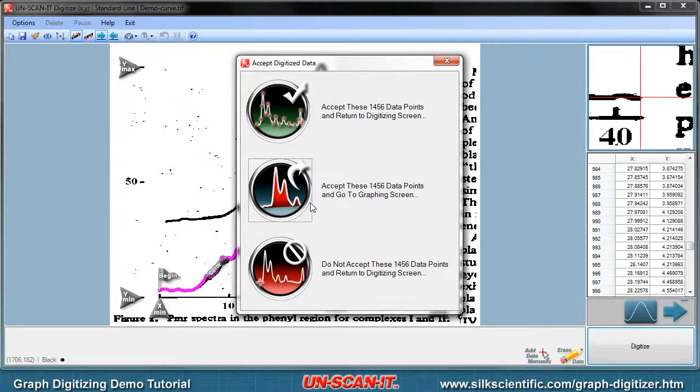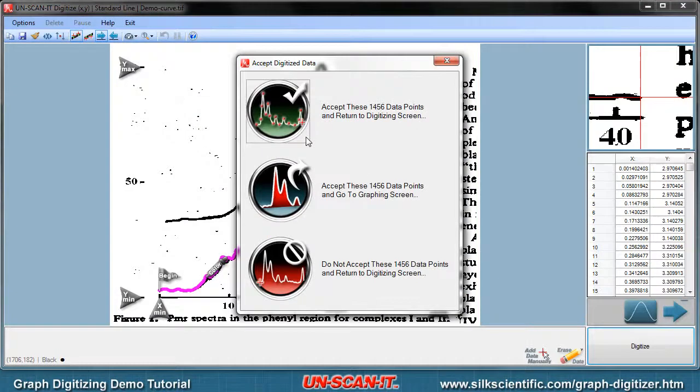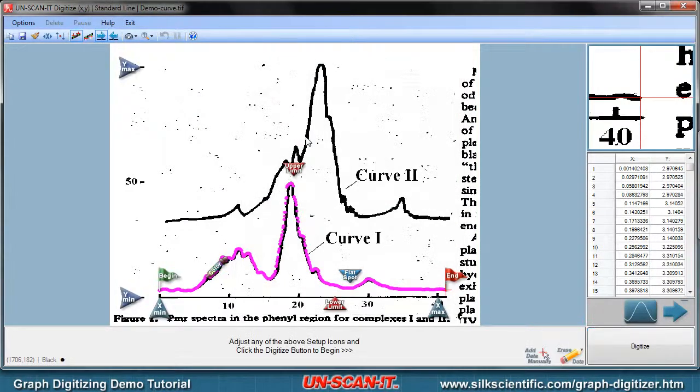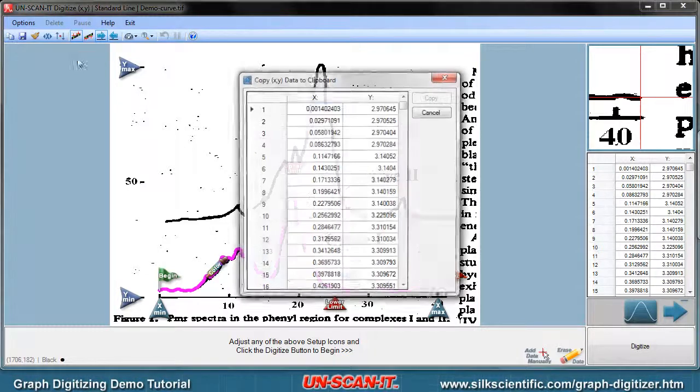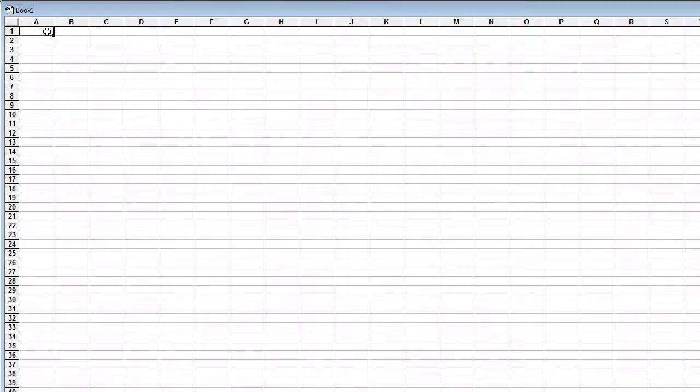After the data points are digitized, you can graph the data using the Unscannit graphing features discussed in another video or you can return to the digitizing screen. The digitized data points can then be saved to an XY data file or copied to the clipboard. The data points can then be pasted into Excel or any other spreadsheet or data analysis program.